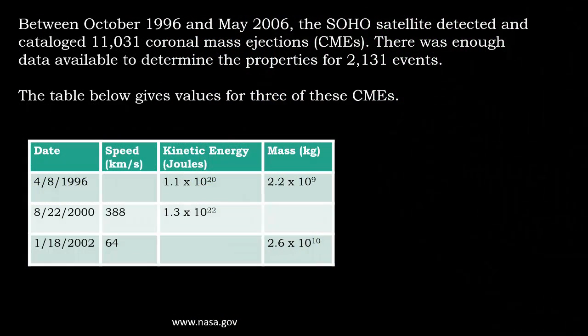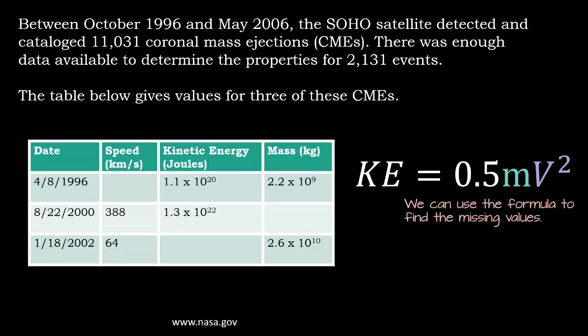Between October 1996 and May 2006, the SOHO satellite detected and catalogued 11,031 coronal mass ejections, CMEs. There was enough data available to determine the properties for 2,131 events. The table below gives us values for three of these CMEs. So what we're going to do is fill in these blank spots using the formula we just learned.